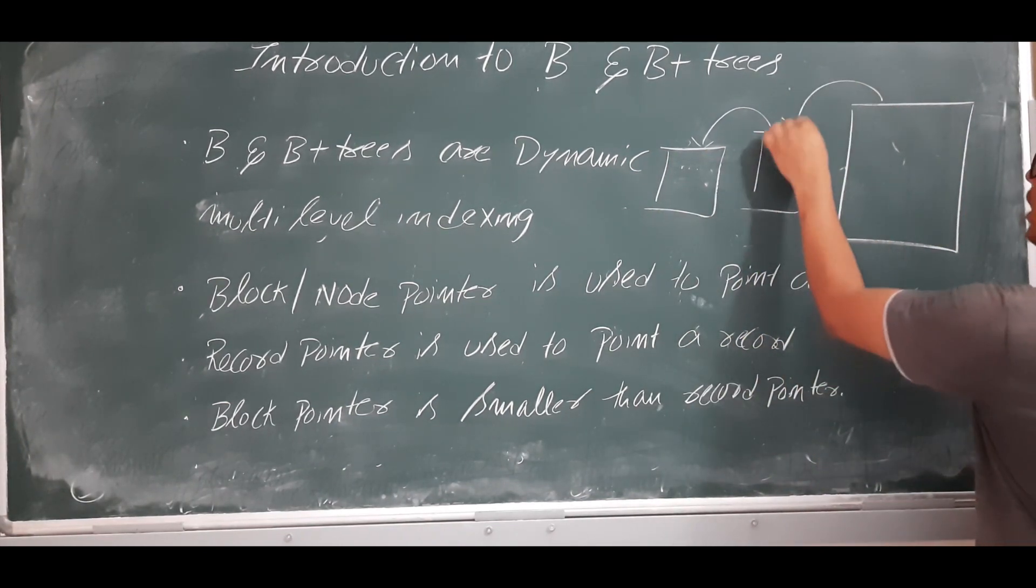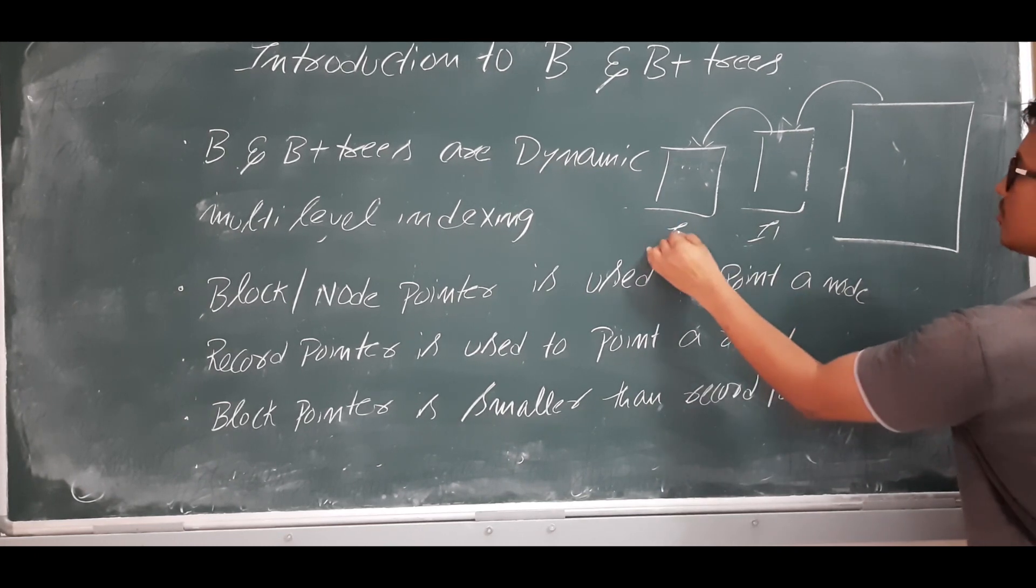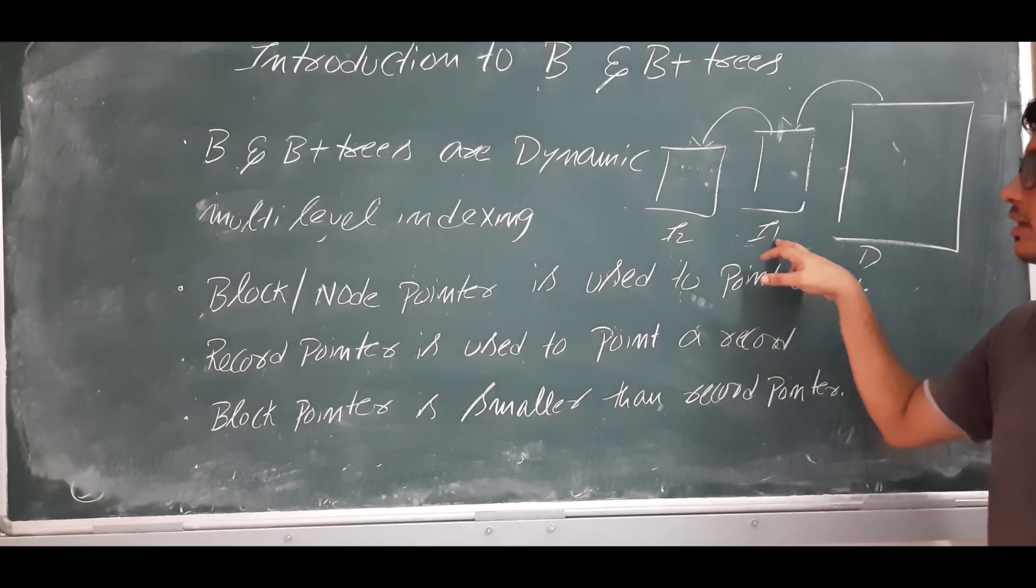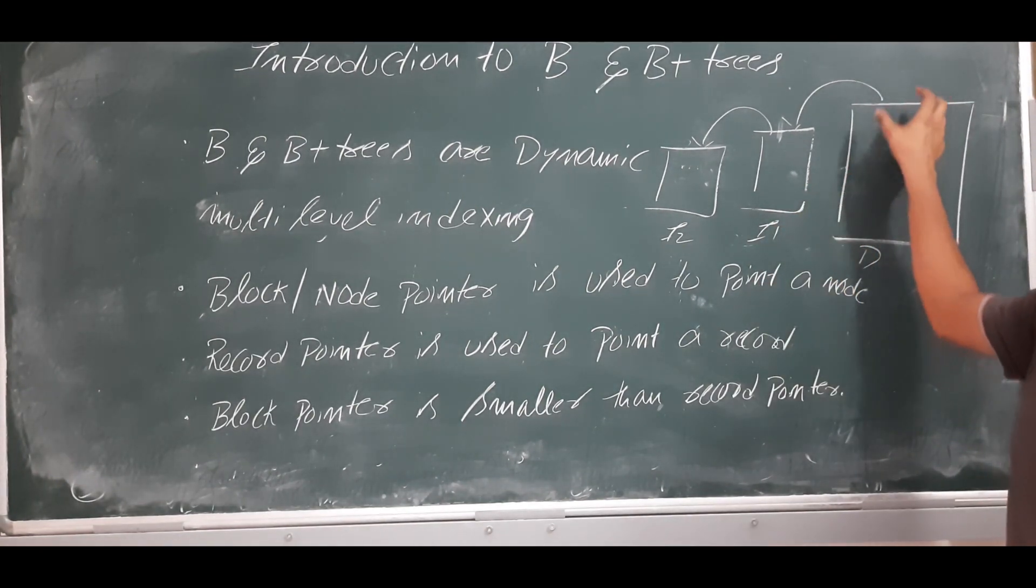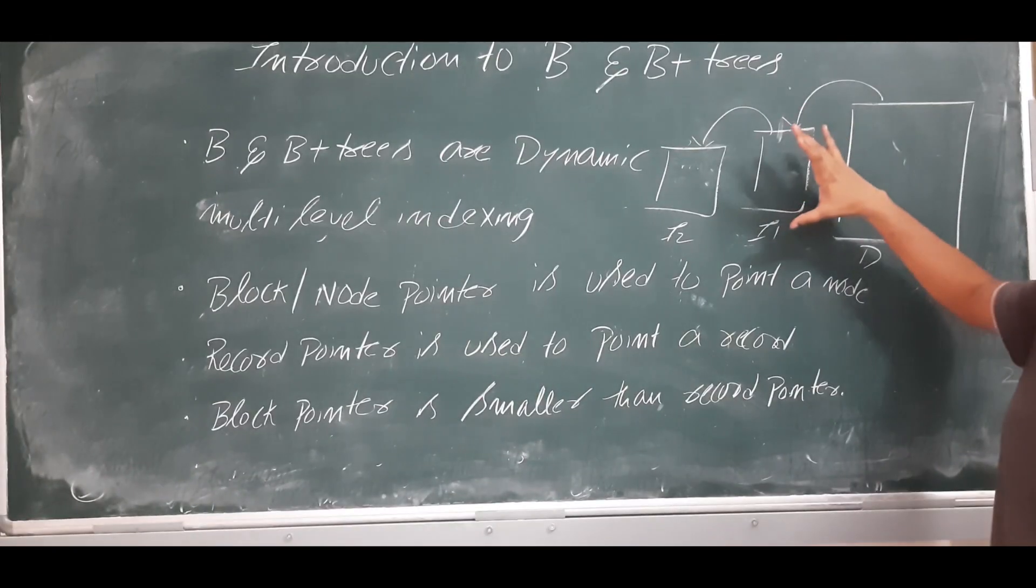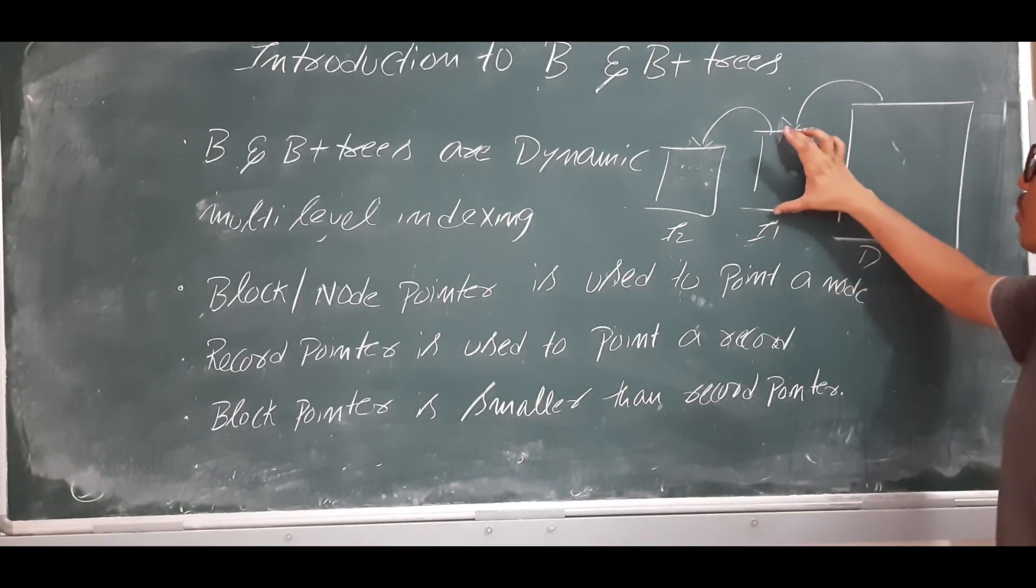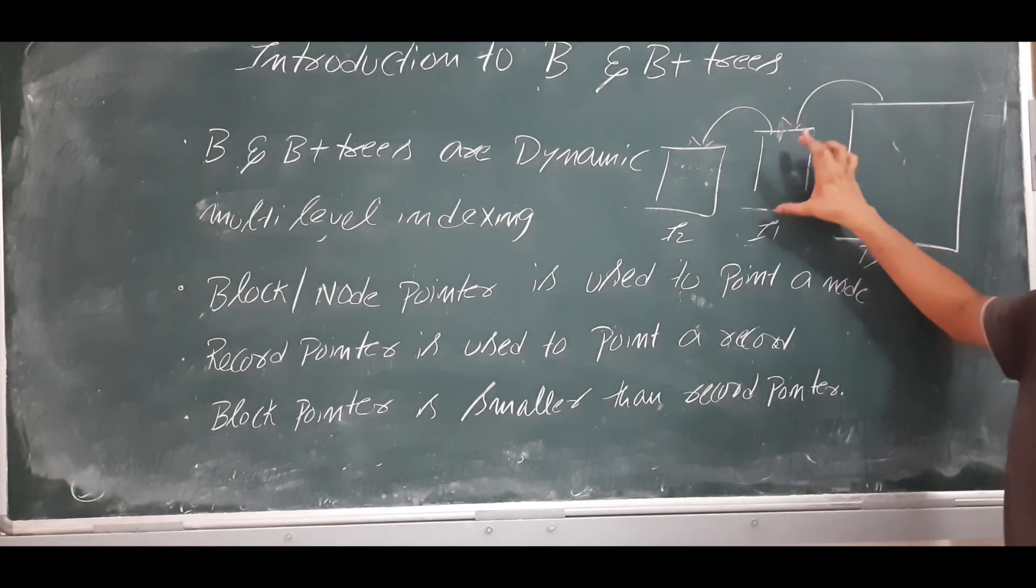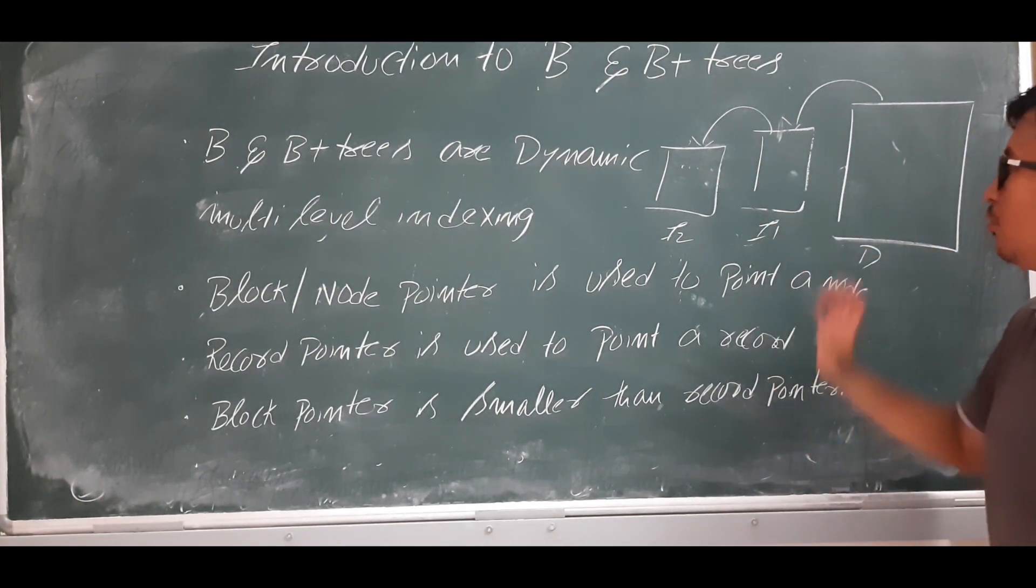This is index file one, this is index file two, and this is data. This index file is created on a particular attribute on the data file. Now I thought the number of block accesses are still more. I want to further reduce them, so I created an index file on an attribute on index file one, resulting in index level file two. So it is multi-level indexing.